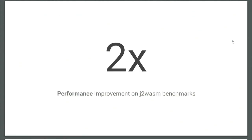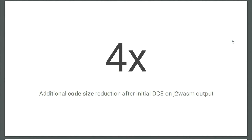So what do you get when you optimize with Binaryen? Your performance can increase by around 2x — that's specifically for the J2WASM (Java to WebAssembly) benchmarks. And your code size will go down even more: 4x after an initial dead code elimination, and if you include that initial dead code elimination it's actually 9x. So this can make a huge difference for your code size.